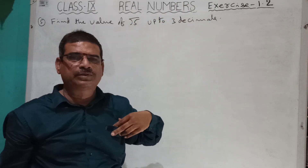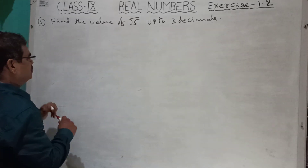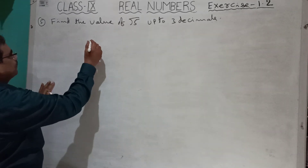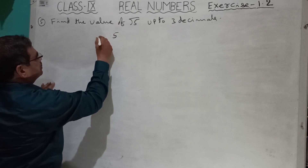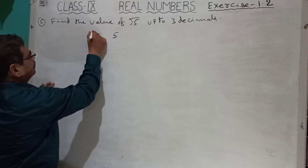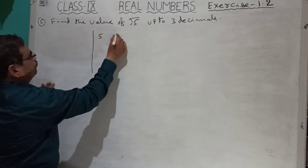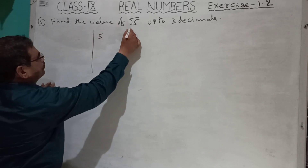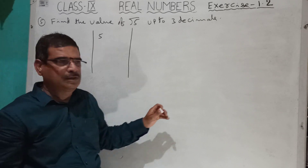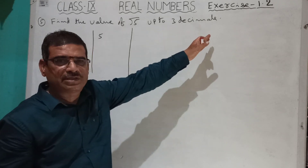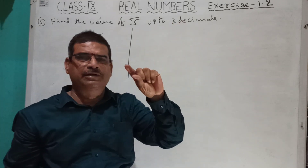To find the square root, the procedure is different. I have to take 5. In division, the rules or regulations are a little bit different.